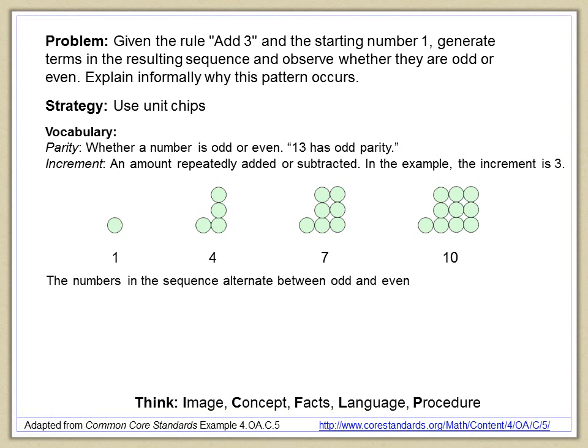So what we're looking for here is the pattern of odd and even. We're looking at the parity of these numbers. And what we see is that the numbers in the sequence alternate between odd and even parity. 1, 4, 7 is odd, 10 is even. The next number will be odd. And we're trying to help students really understand and be able to explain why this is so.